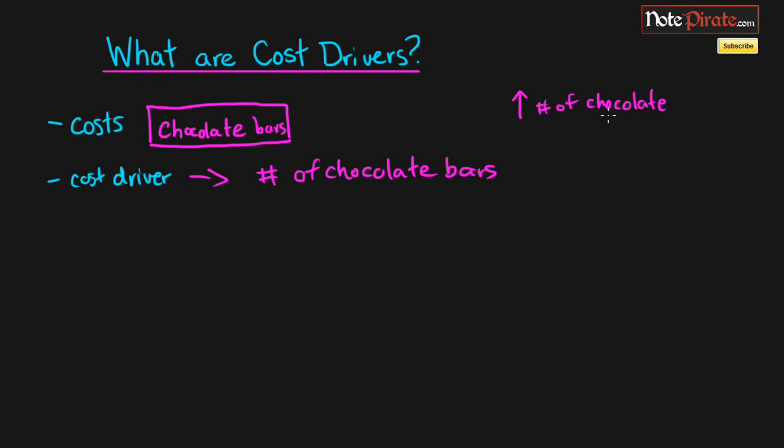that caused the cost to become incurred. So as the number of chocolate bars increases, the cost will increase as well. It drives the cost up, and that's kind of where they derived that term from, to call it cost drivers. Because the activity drives up the cost, we could have used a different cost driver.